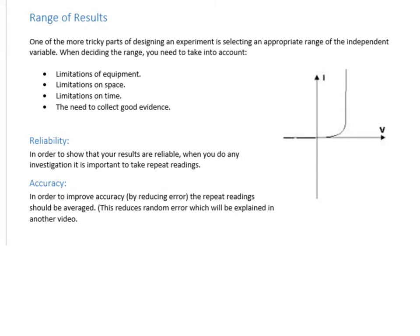Selecting your range of results — this is the bit most people tend to miss out. They say their independent variable is potential difference, but they don't say what values they're going to take to see the impact on the current. For example, if you're trying to identify a component using an IV characteristic, for a diode you'd expect infinite resistance when potential difference is negative, then negligible or reducing resistance as it goes positive. So to definitively prove it's a diode, you'd need both positive and negative potential difference readings.